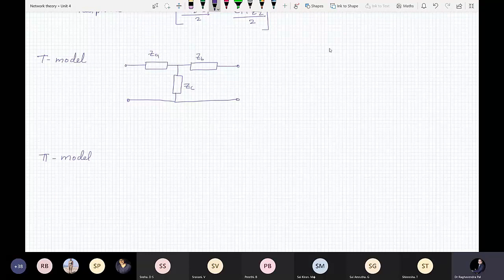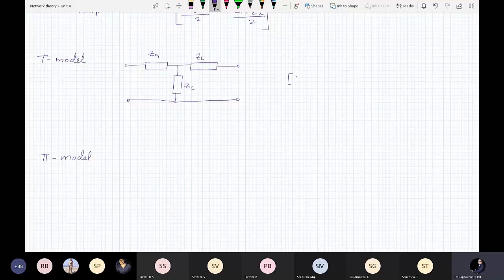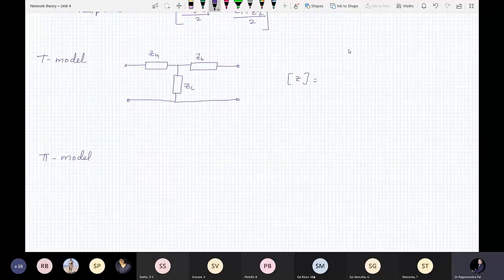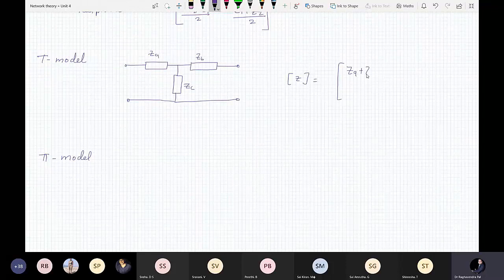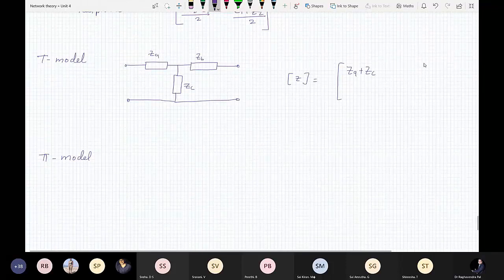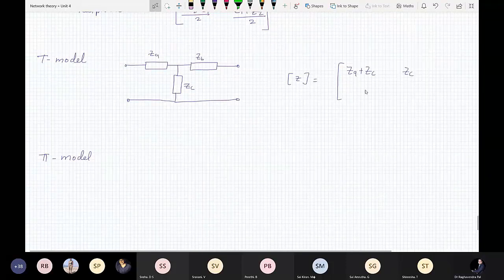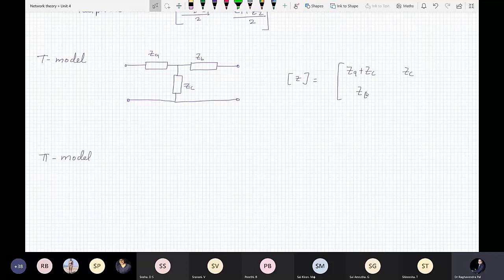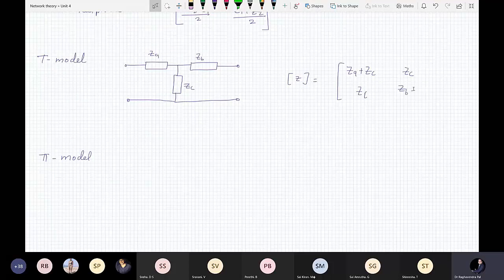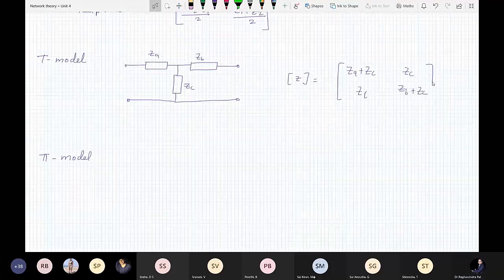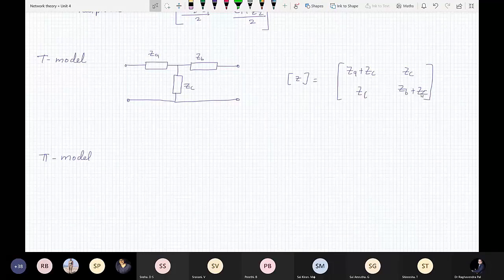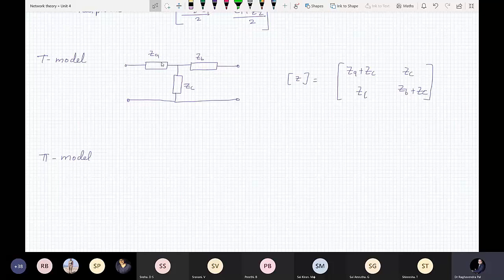Now, how to calculate the Z-parameter? The direct formula for the Z-parameter of this T-model - it is looking like T, that is why it is called T-model. It is basically ZA plus ZC, ZC, ZB - I am sorry - ZC and ZB plus ZC. So this is the Z-matrix for T-model.